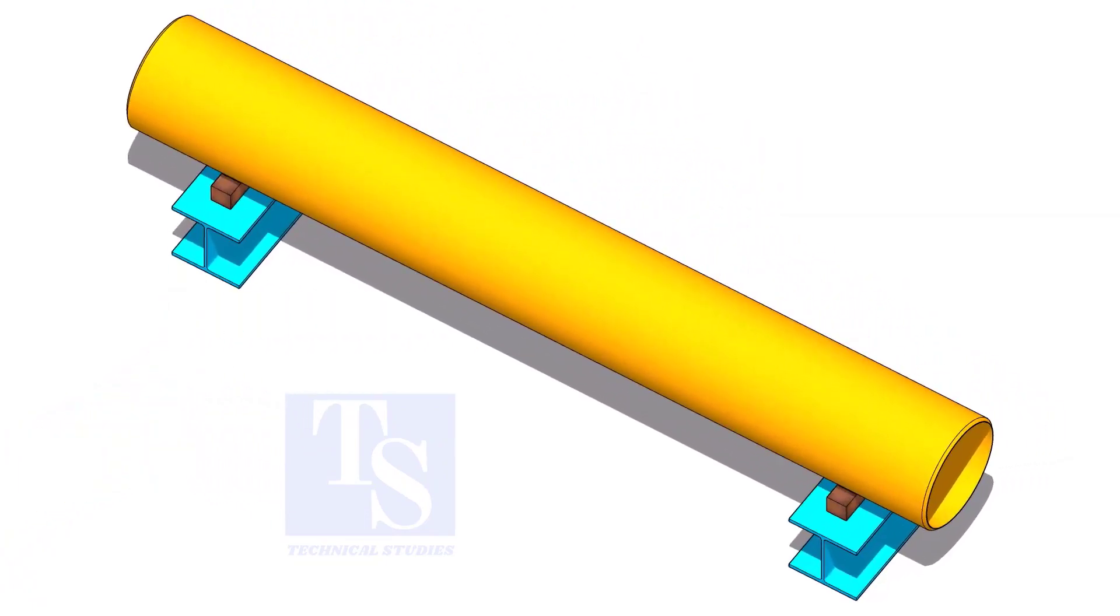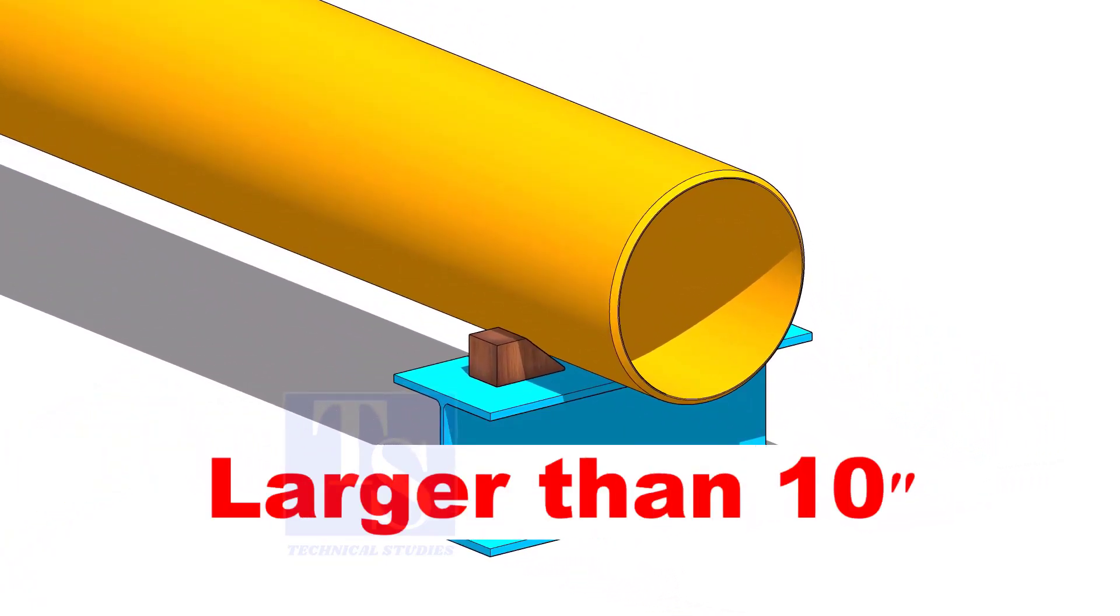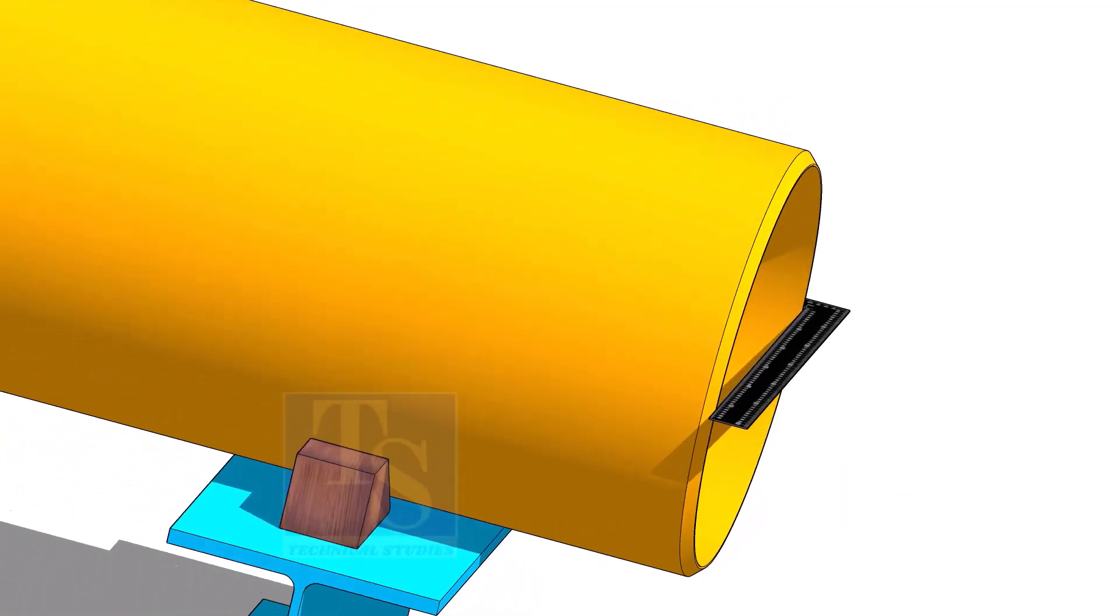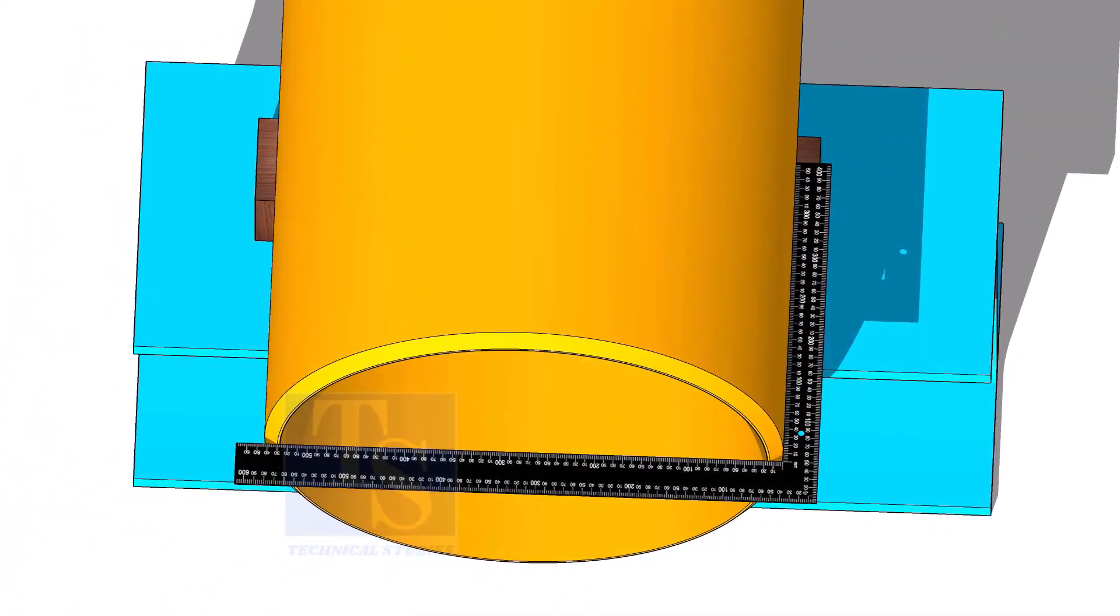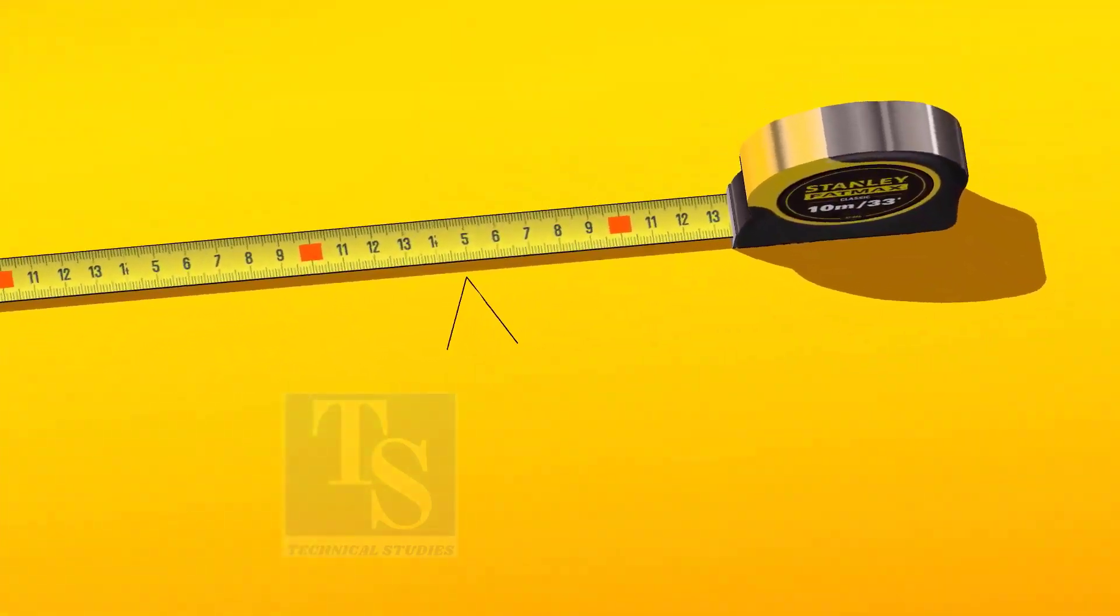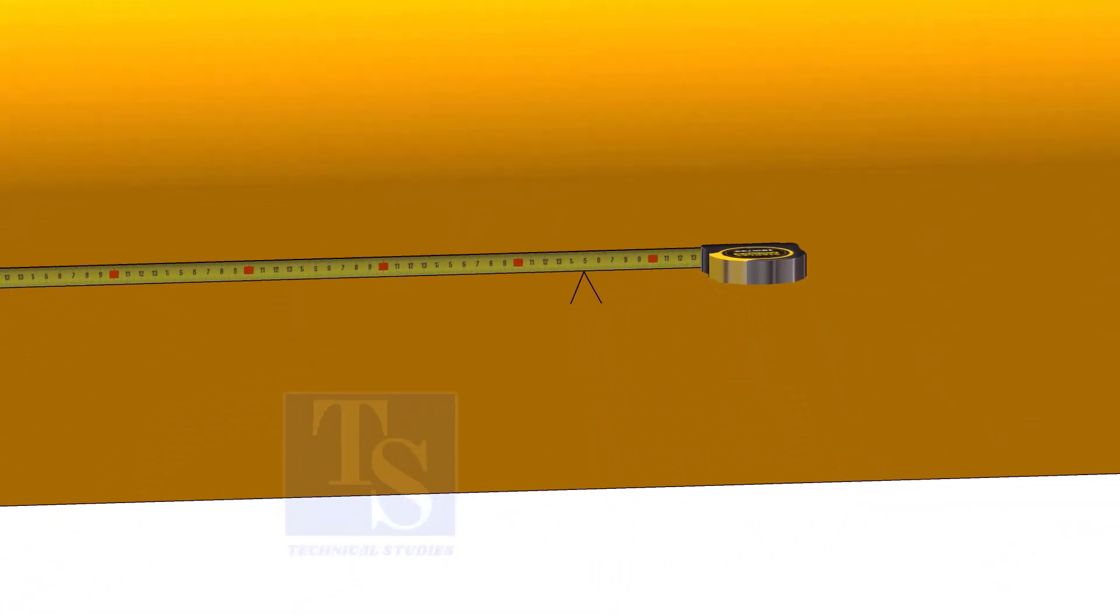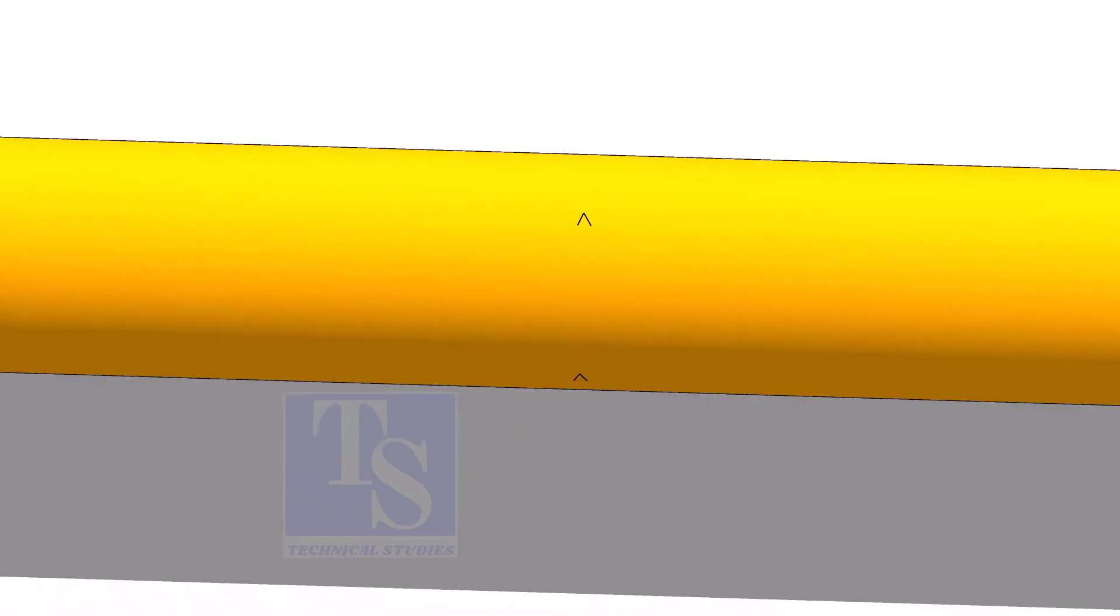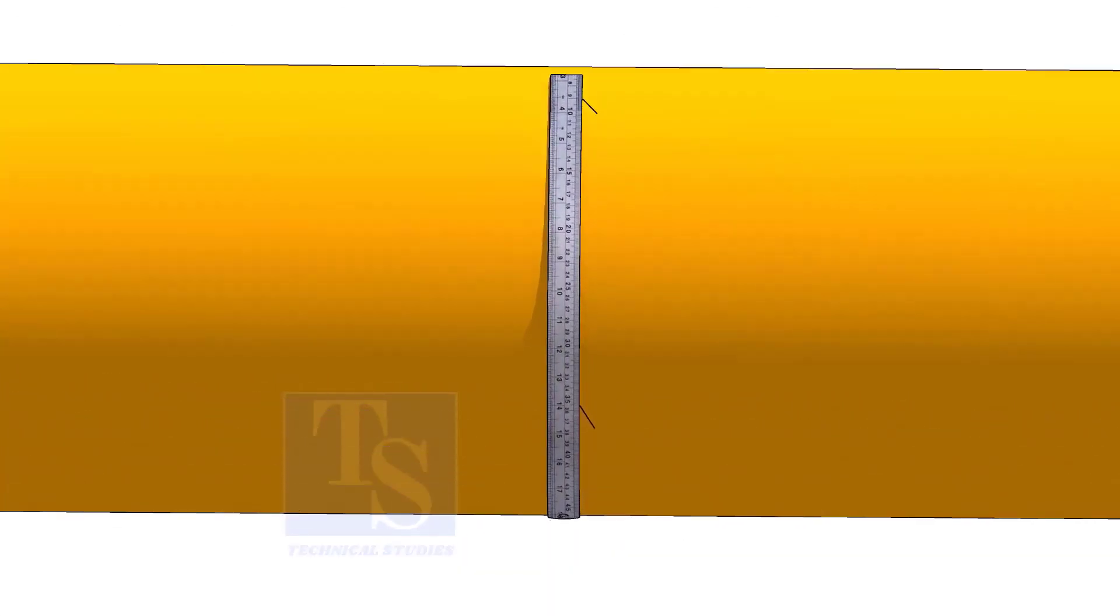For pipes larger than 10 inches, check the squareness of the pipe end. Mark the length on multiple locations as shown. Join the marks using a bend scale.